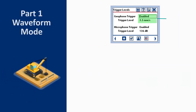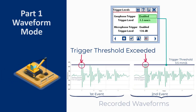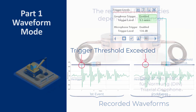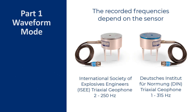Once one of these signals exceeds the trigger level, the unit will start recording the data. The recorded frequencies depend on the sensor being used. For example, an ISE triaxial geophone will record 2 to 250 Hz signals, whereas a DIN triaxial geophone will record 1 to 315 Hz signals.